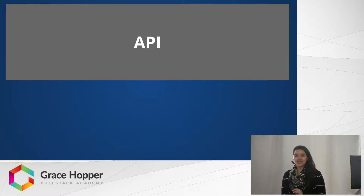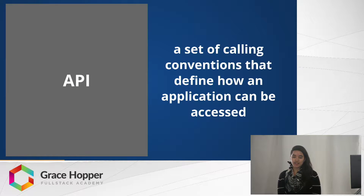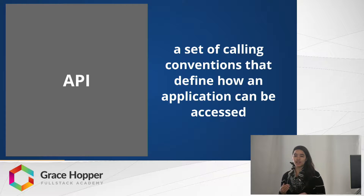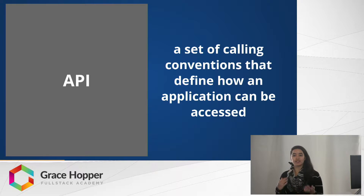So basically, what is an API? It stands for Application Program Interface. It's very simply defined as a set of calling conventions that define how an application can be accessed. You could think of it like a contract between the API and the client — if you make a call to the API, you will get this in return.